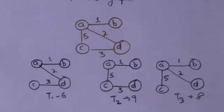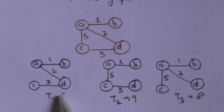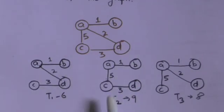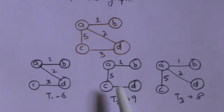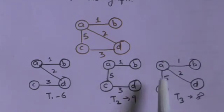The sum of weights of all edges of a spanning tree is called the weight of that spanning tree. So the weight of spanning tree T1 is 1 plus 2 plus 3, that is 6. The weight of T2 is 1 plus 5 plus 3, that is 9. And the weight of T3 is 1 plus 2 plus 5, that is 8.